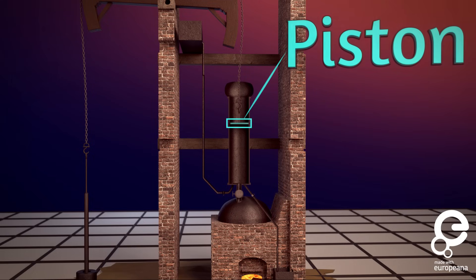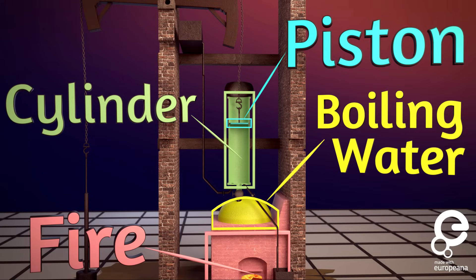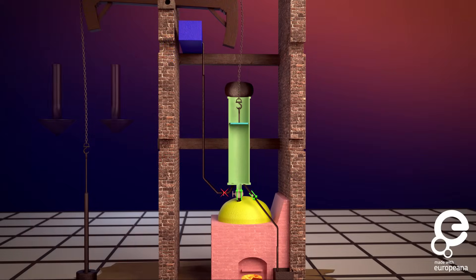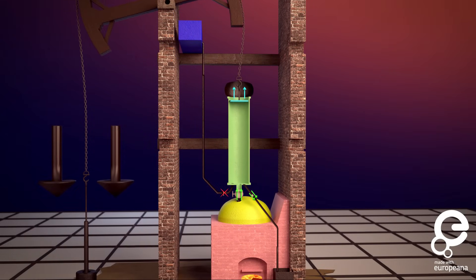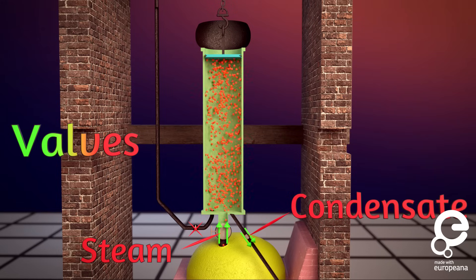Here we have a piston, a cylinder, a tank of boiling water with a fire underneath it, a tank of water, and a set of valves. To start the cycle, the weight of the pump side is heavier so the piston is pulled up. While this is happening, hot steam is filling the cylinder and when the chamber is full, the chamber is sealed by closing these two valves.